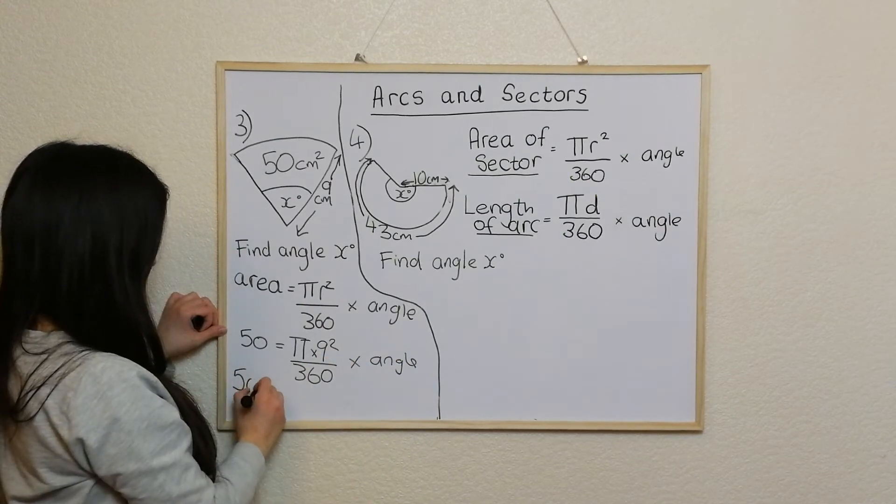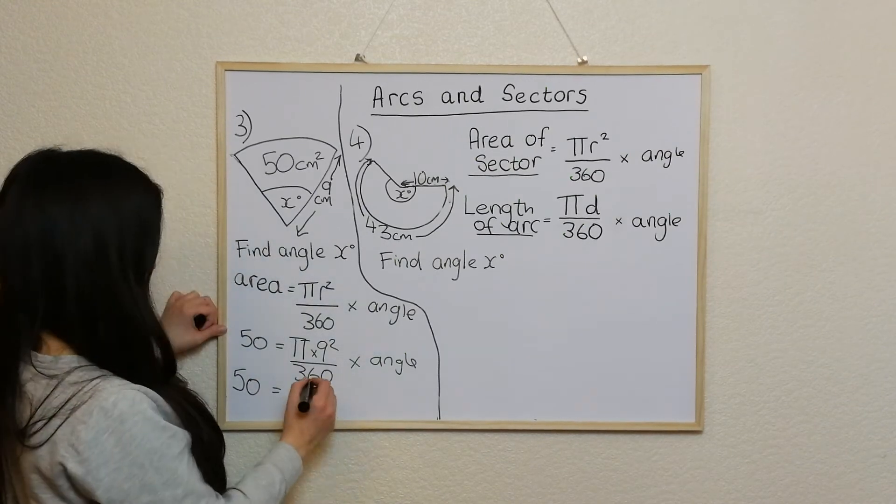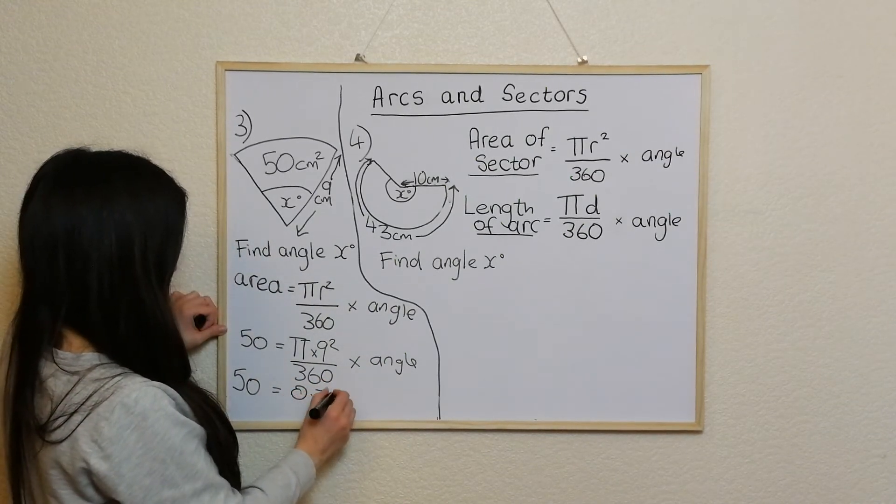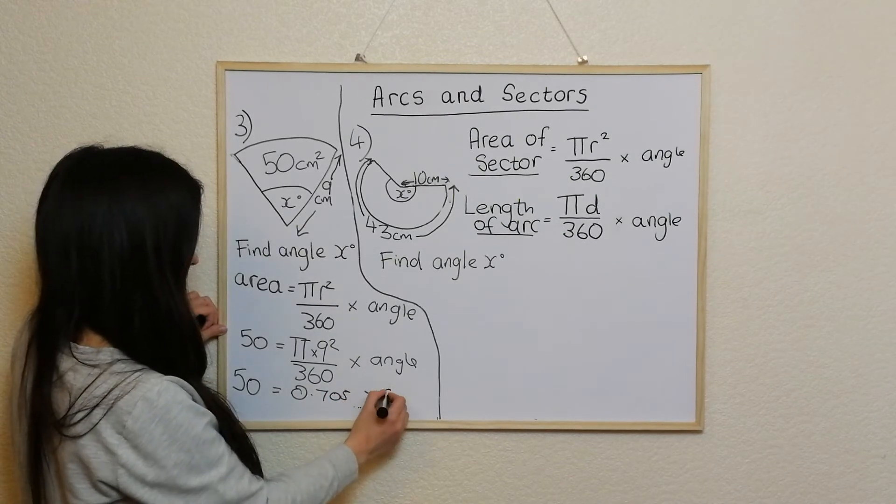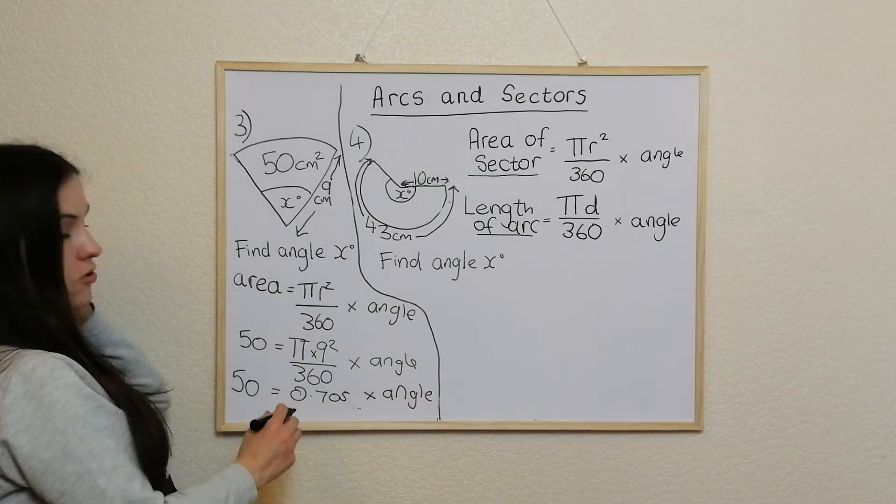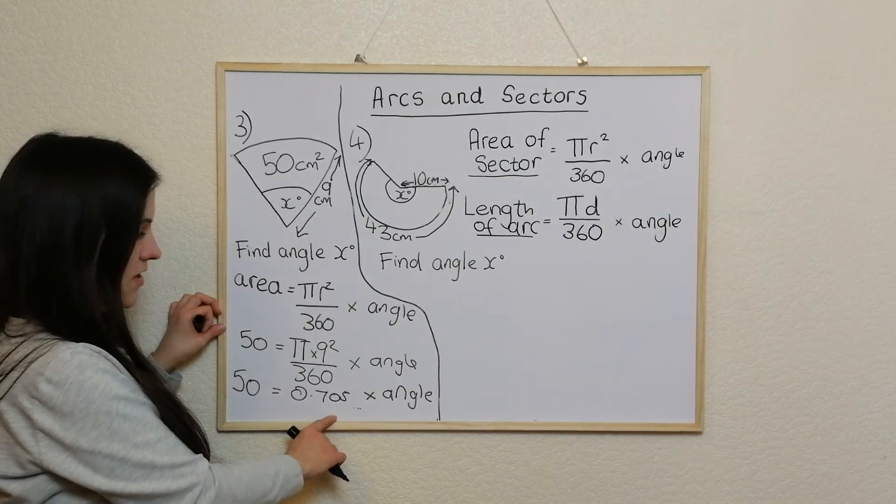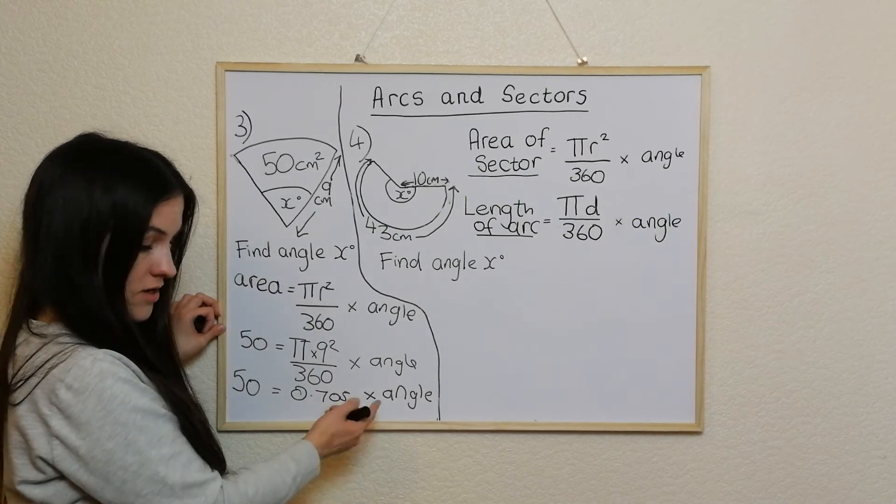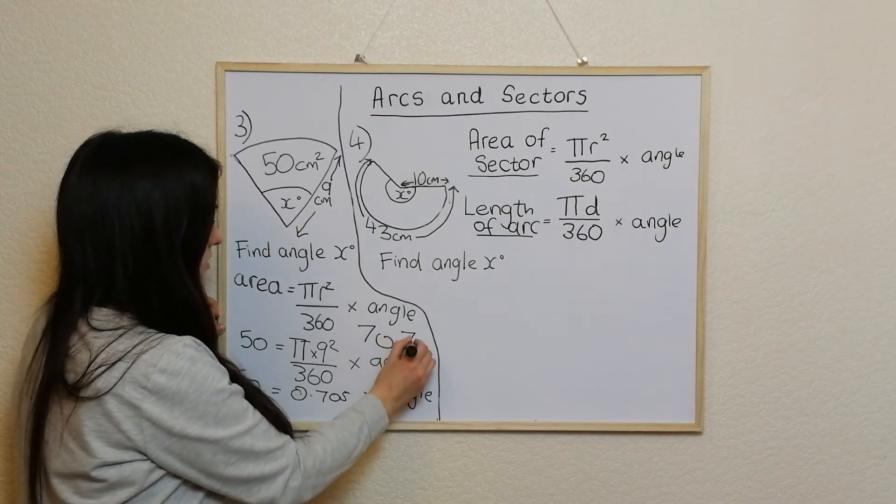50 is equal to 0.705 times angle. And all I need to do to get the angle on its own is do 50 divided by this. So to get the angle, what I actually get is the angle is 70.7 degrees.